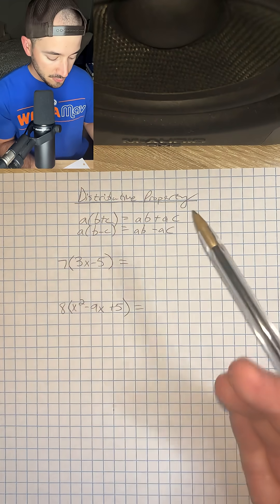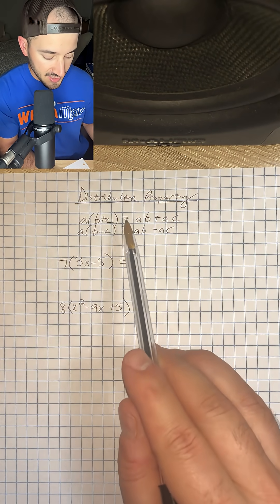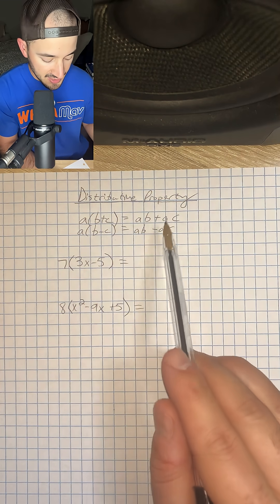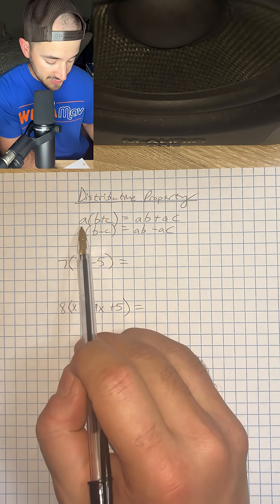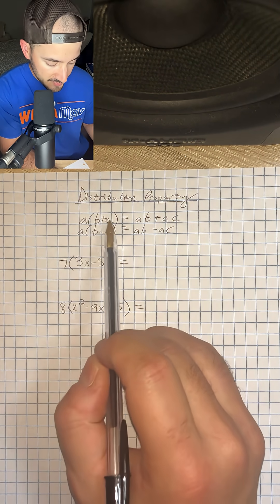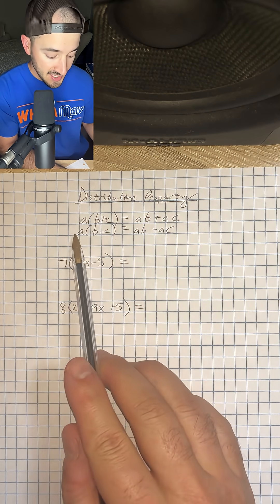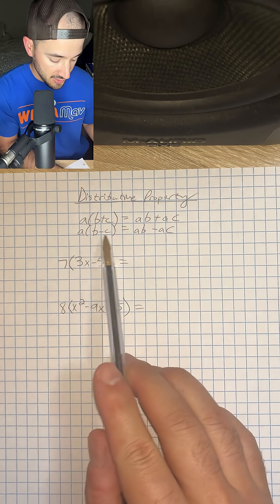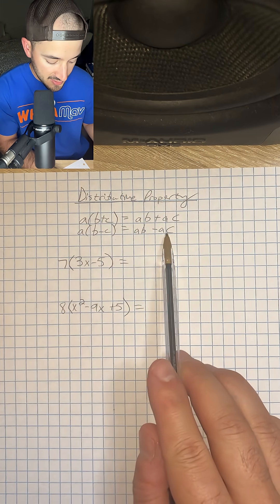The distributive property basically is A times parentheses B plus C is equal to A times B plus A times C. Basically just saying that we distribute or multiply this A by both terms inside the parentheses so that it's kind of regrouped. The same can be said even if it's A times B minus C, so it's going to be equal to A times B minus A times C.